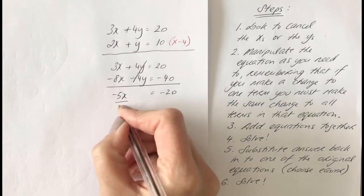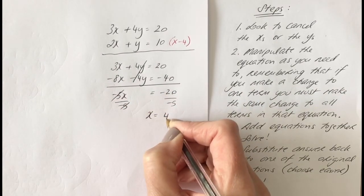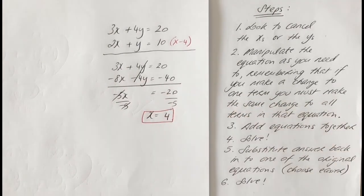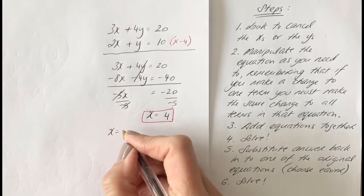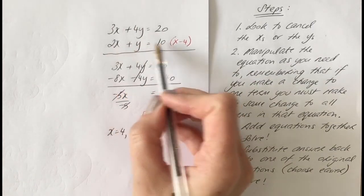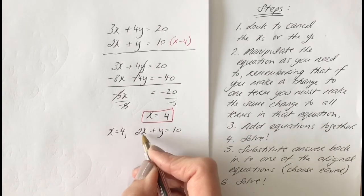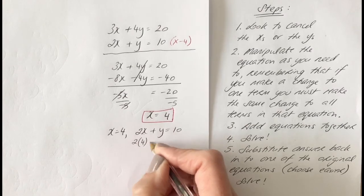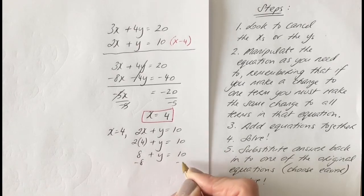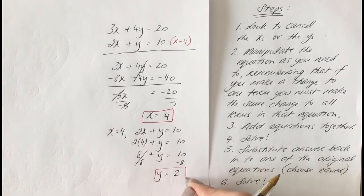Step three — add the equations: 3x minus 8x is minus 5x; 4y minus 4y cancels to nothing; 20 minus 40 is minus 20. So minus 5x = minus 20. Dividing both sides by minus 5 gives x = 4. Step five: substitute x = 4 into the simpler original equation, 2x + y = 10. So 2 times 4 plus y equals 10, giving 8 + y = 10, and y = 2.